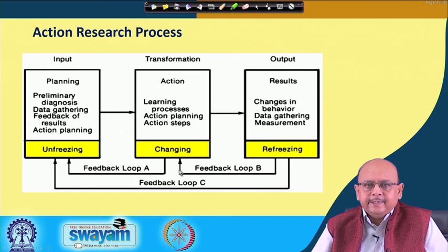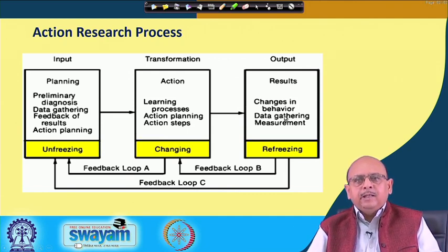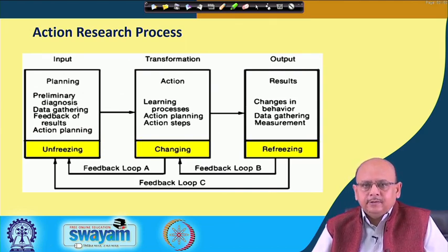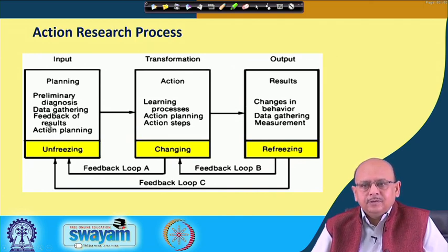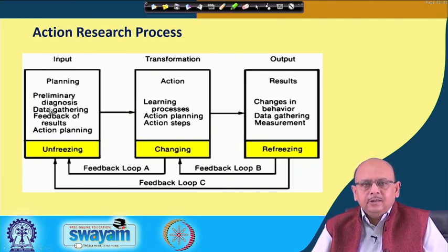So you can see three feedback loops — one from here, one from refreezing to moving, and the third one from refreezing to the planning stage. Once you have institutionalized the technology and it becomes a part of the system, it does not mean you are not going to unfreeze it further. Maybe after some time, you think that this technology is again getting obsolete and outdated, and you are planning about a better technology. So again you go for unfreezing. You get constant feedback about the kind of technology, how it is working, and the moment you think it is not working well, again you start planning about it and then move ahead. This is what the action research approach to change is.